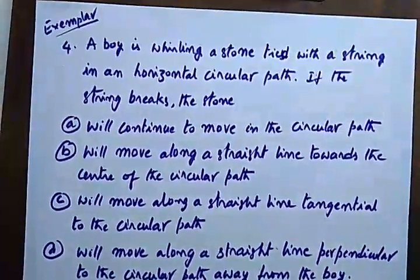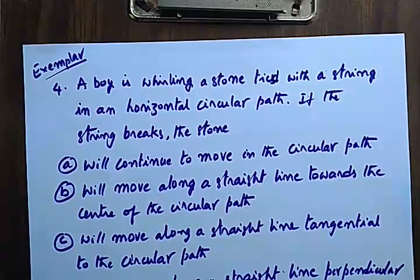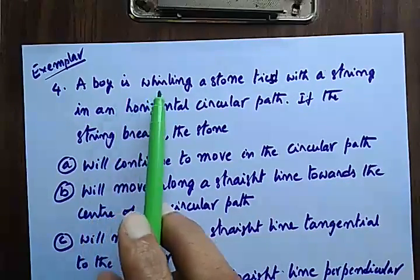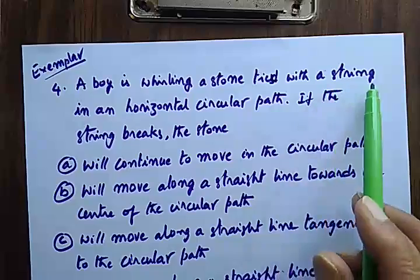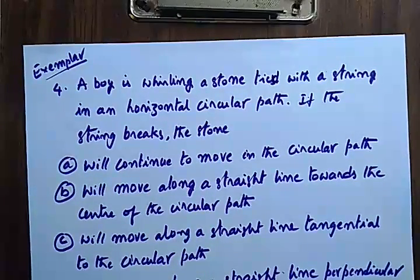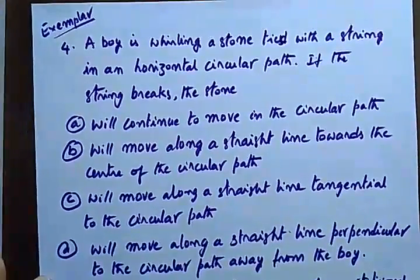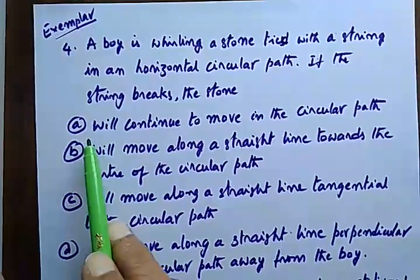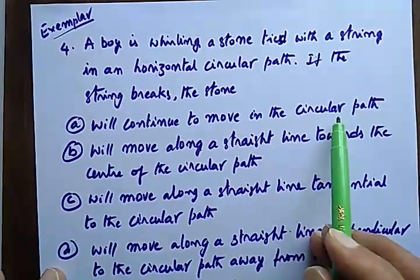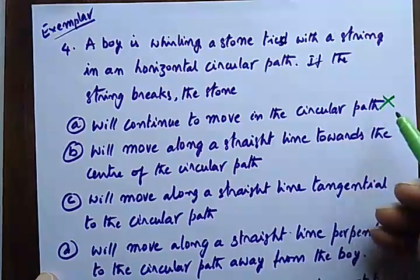Next is exemplar question number four, a multiple choice question. A boy is whirling a stone tied with a string in a horizontal circular path. If the string breaks, the stone — option A says it will continue to move in the circular path. If the string is cut, no, it won't go in a circular path.